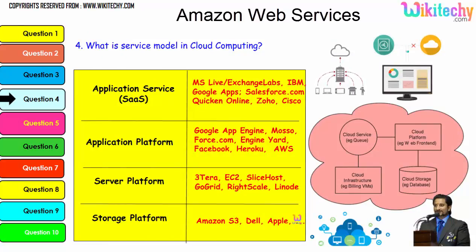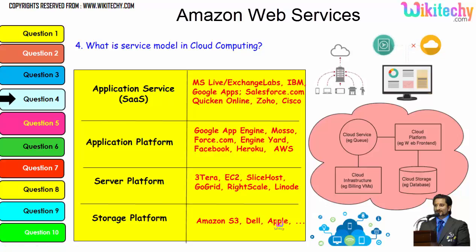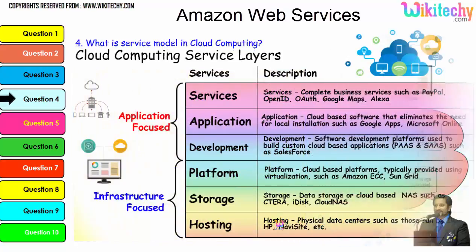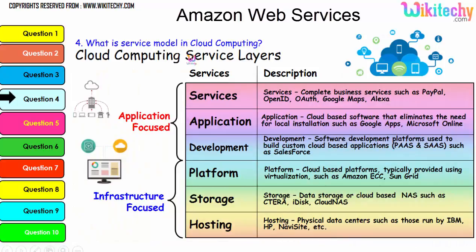Digging further into the service model, typical examples include: application service, application platform, server platform, and storage platform — with storage given by Amazon S3, Dell, and Apple. The important service layers are services, application, development platform, storage, and hosting. These are all typical examples under these services and are also important topics that will be asked in cloud computing interviews.